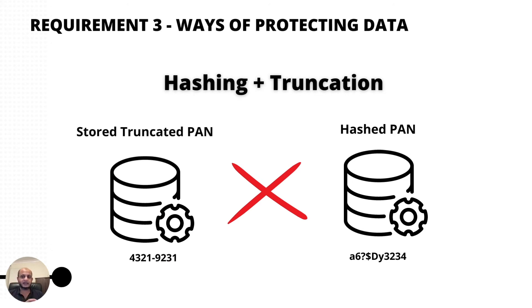Very important: you cannot store truncated and hashed versions of the same payment card within your cardholder environment. The reason is that these two forms can be correlated — if an attacker has access to both the truncated PAN and the hashed version, they can reconstruct the original PAN. Whether storing in databases, flat files, spreadsheets, backup files, or audit logs, use one or the other but do not store them together.